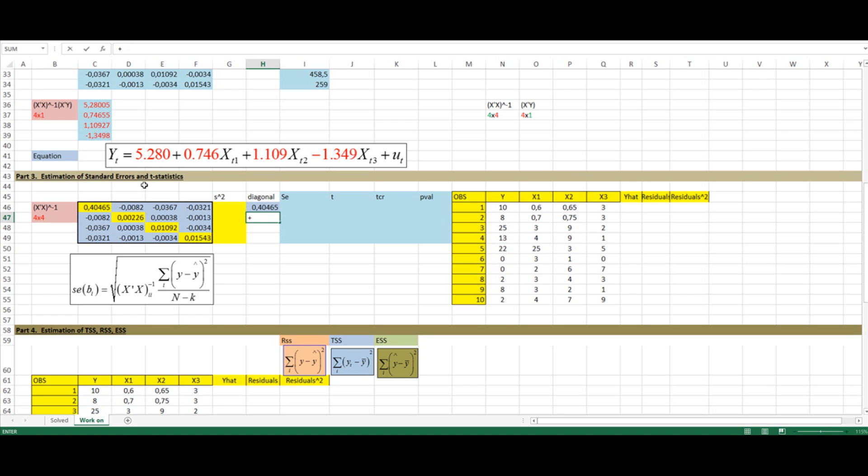For the first coefficient, I'm going to need the value 0.4. Similarly, for the second coefficient, I will need the value in cell 2,2. And for the third coefficient, I will need 0.01. And finally, for the fourth coefficient, 0.015. So I have the first part of this expression.